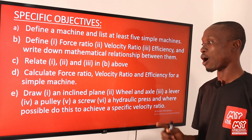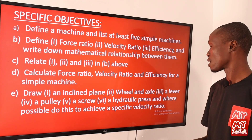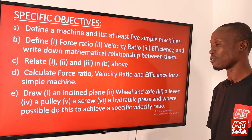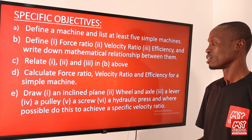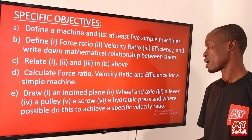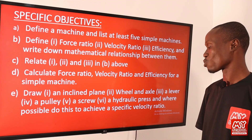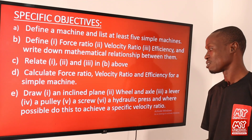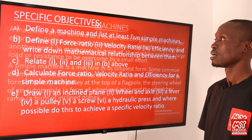E. Draw (i) an inclined plane, (ii) wheel and axle, (iii) a lever, (iv) a pulley, (v) a screw, (vi) a hydraulic press, and where possible, use these to achieve a specific velocity ratio. So let's move to the next slide and begin with our lesson.